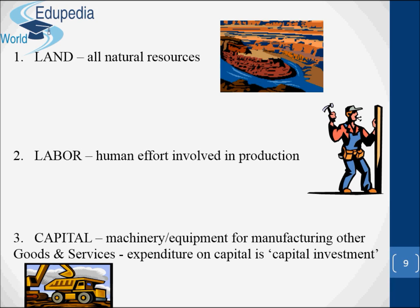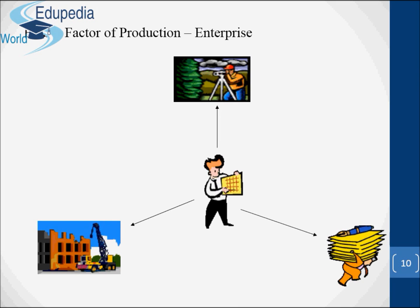Three: capital or manufactured resources. Capital consists of all those inputs that have themselves had to be produced. The world has a limited stock of factories, machines, transportation and other equipment. The productivity of this capital is limited by the current state of technology. There is a fourth factor of production called enterprise or entrepreneurship, which is the ability to combine the other three factors: land, capital, and labor.